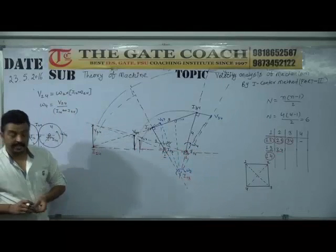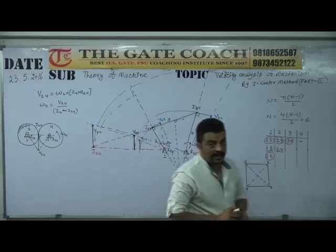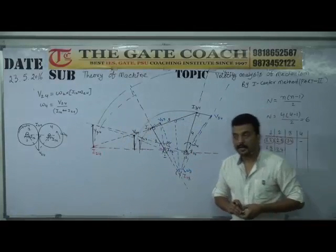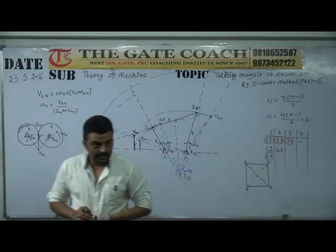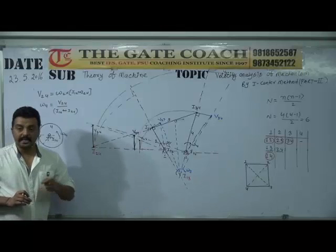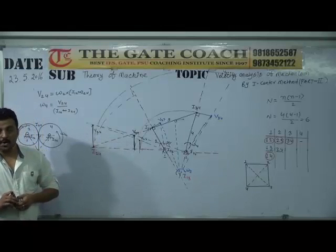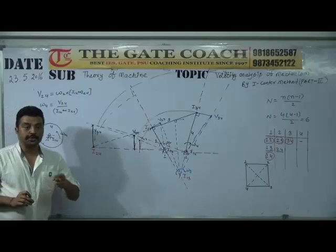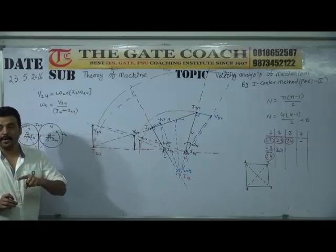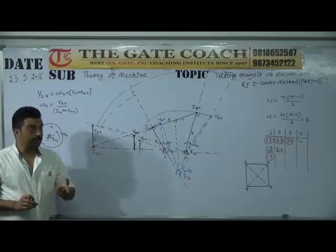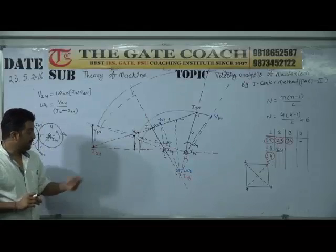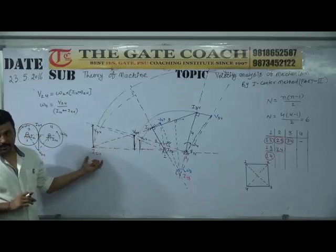If the number of links is 6 and omega 2 is given and we want to calculate omega 6, we need to find where I₂₆ is. Since 2 is known and 6 has to be calculated, we find I₂₆ — that is the shortest tactic to directly obtain the desired angular velocity.